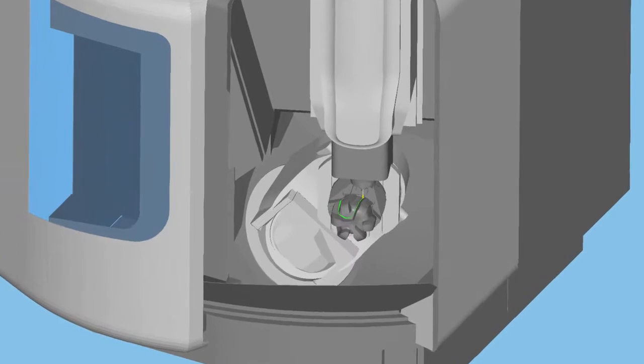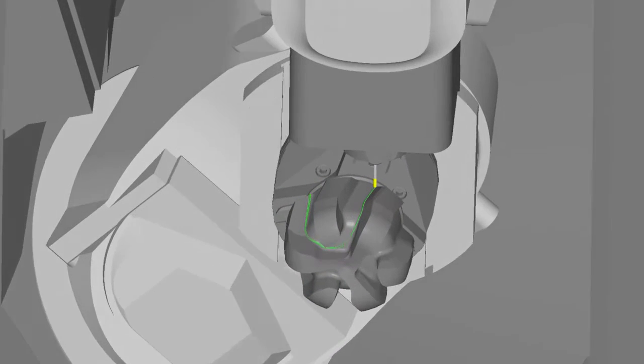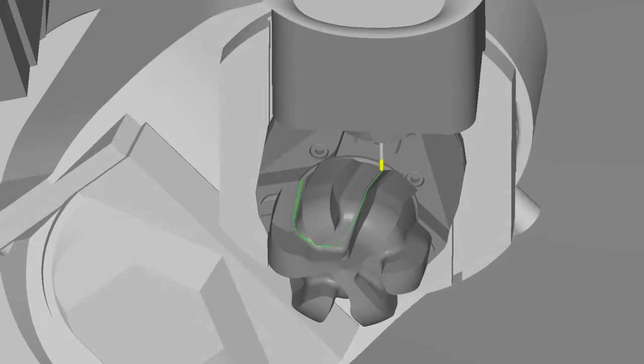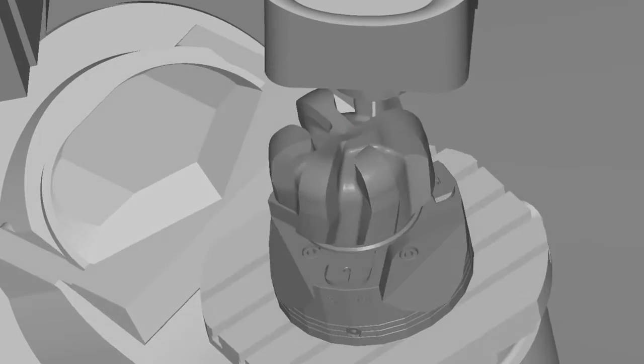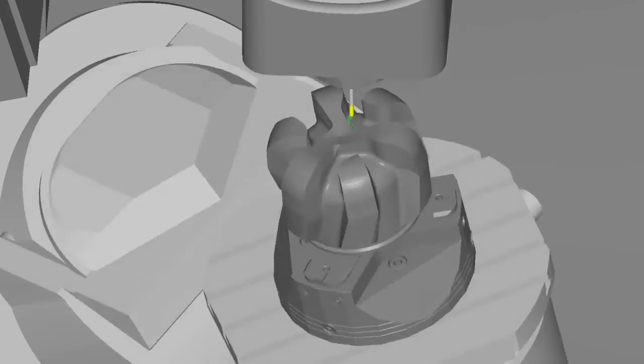With one single interface, the Esprit 5-axis composite machining cycle allows users to independently define machining patterns and tool orientation to be used for creating simultaneous 5-axis toolpaths.